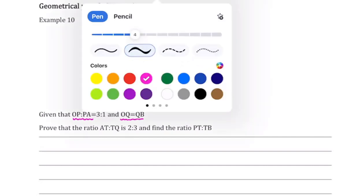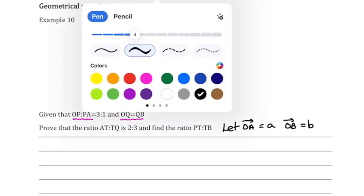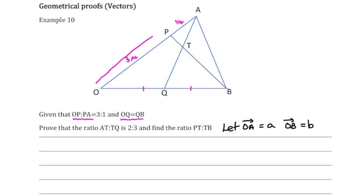The first thing we're going to do is let OA be vector a and OB be vector b. In the exam they will probably state that for you, and a and b will be bold — don't panic about making them bold or putting tags over them, they will not penalise you for that. So O to A is vector a and O to B is vector b.